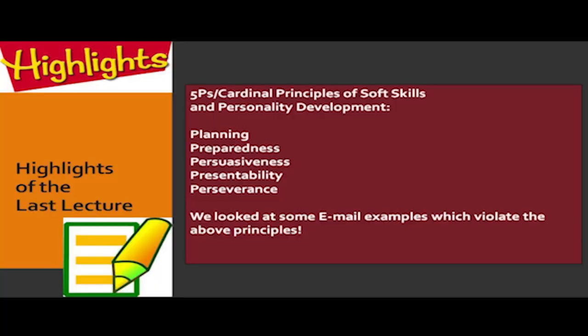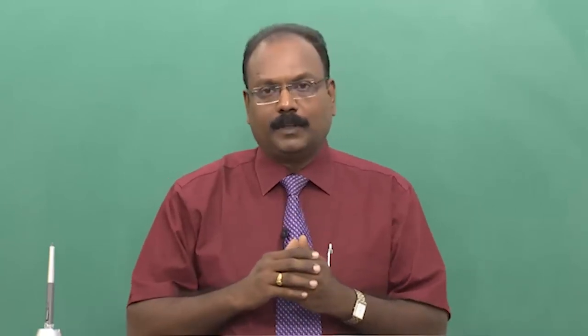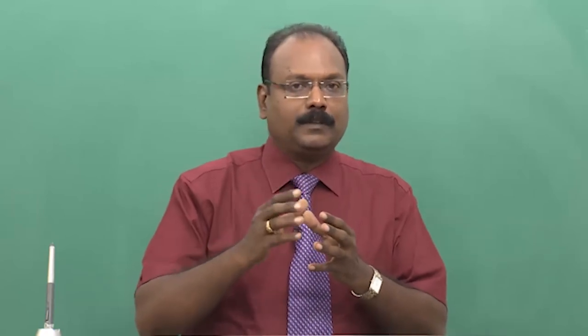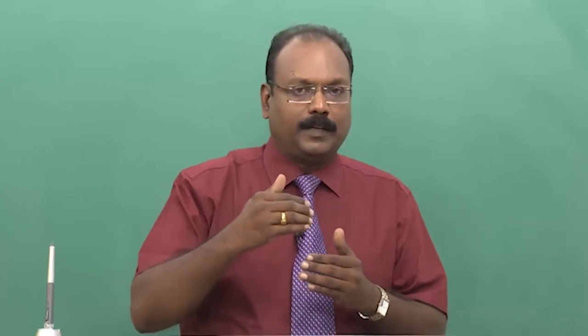I focused on the five P's which I call the Cardinal Principles of Soft Skills and Personality Development: Planning, Preparedness, Persuasiveness, Presentability, and Perseverance. Even in terms of habit, you need to plan to develop a good habit or change a bad habit. For example, if you cannot get up early in the morning, you have to plan and prepare — like setting an alarm, asking somebody to wake you up, or keeping attractive things like buying new jogging shoes or a costume for jogging. That is preparedness.